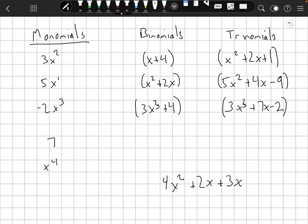So we've got 3x squared. This is 5x to the first, negative 2x cubed. This one you don't see a variable but it is there. It's just x to the zero which is one. So it's also a monomial. And then we have x to the fourth there. So these are all examples of monomials.